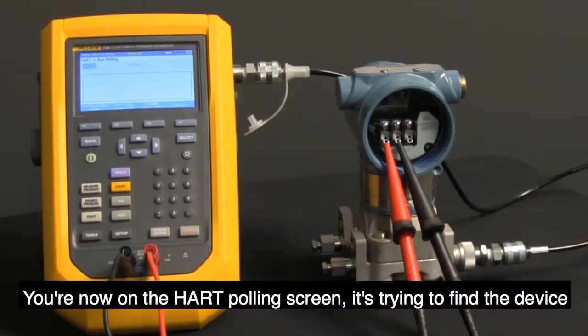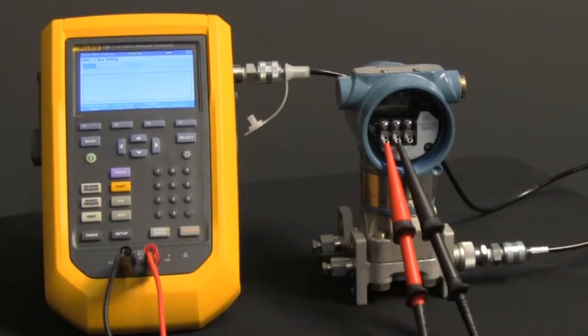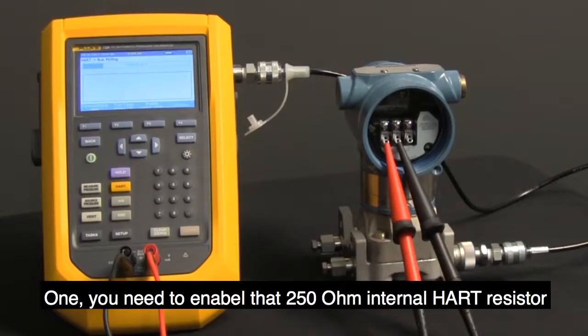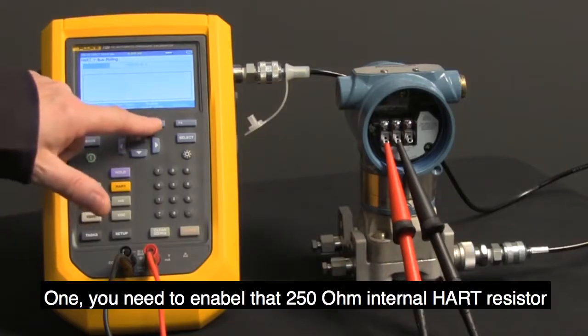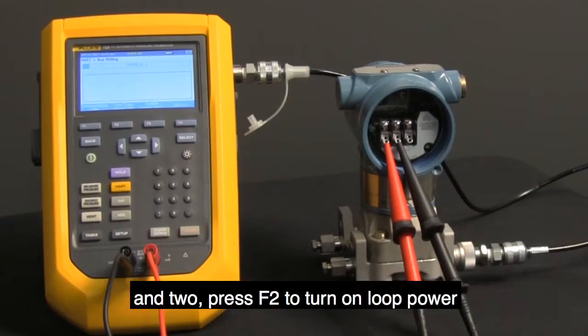You're now on the HART polling screen. It's trying to find the device. Two things you need to do: one, you need to enable that 250 ohm internal HART resistor, and two, press F2 to turn on loop power.